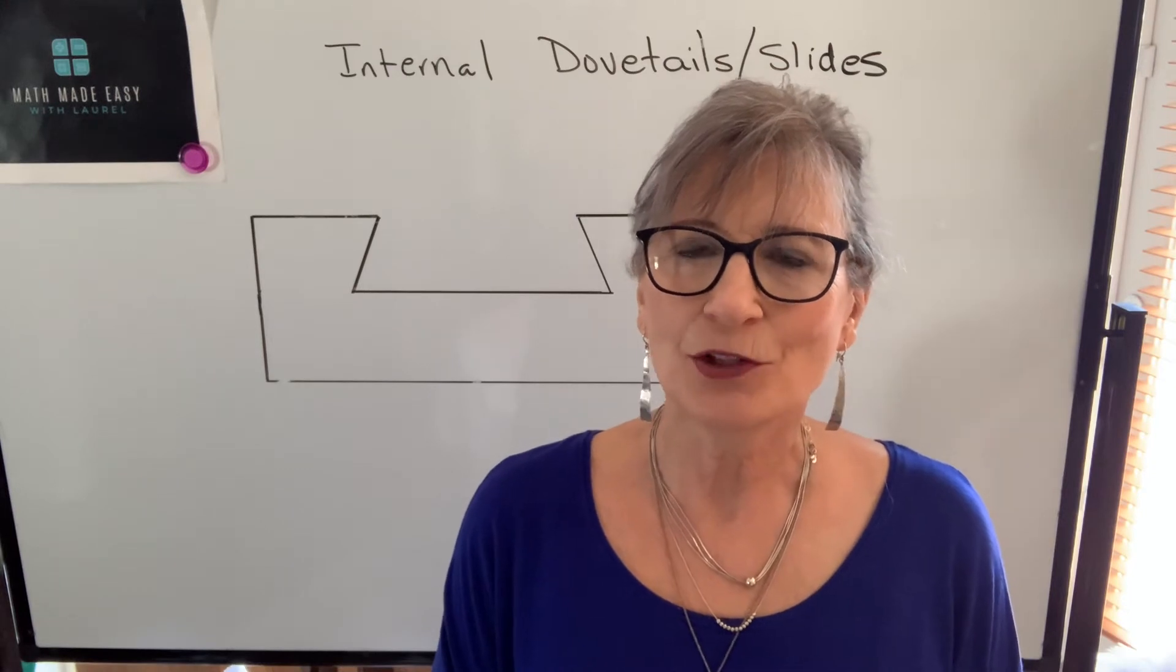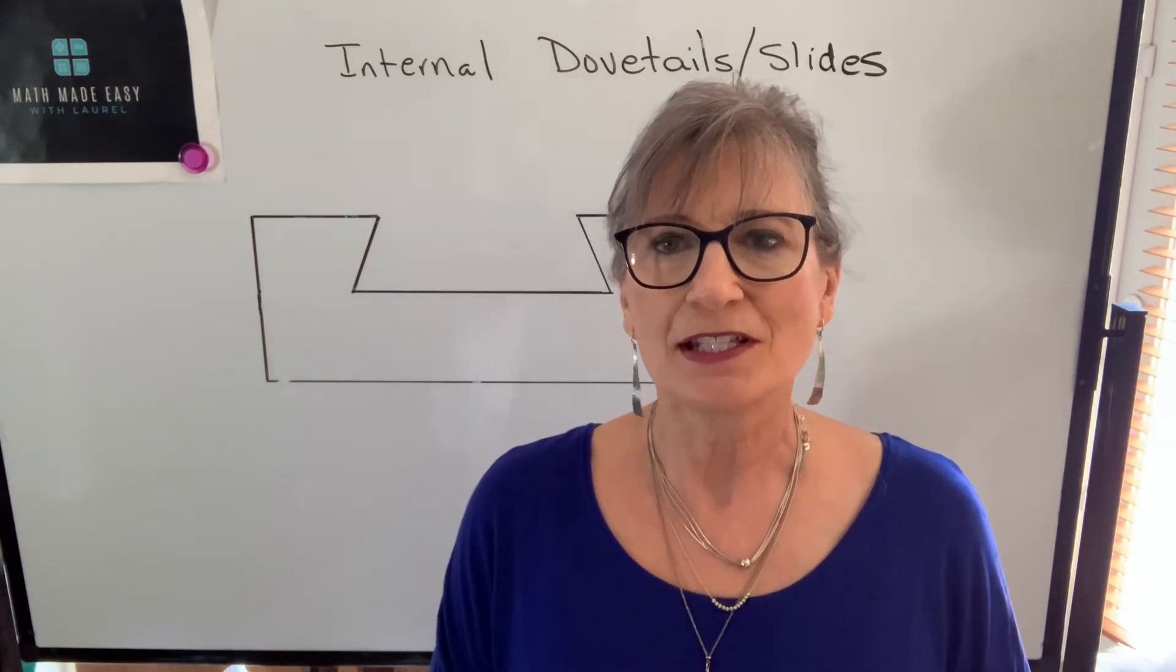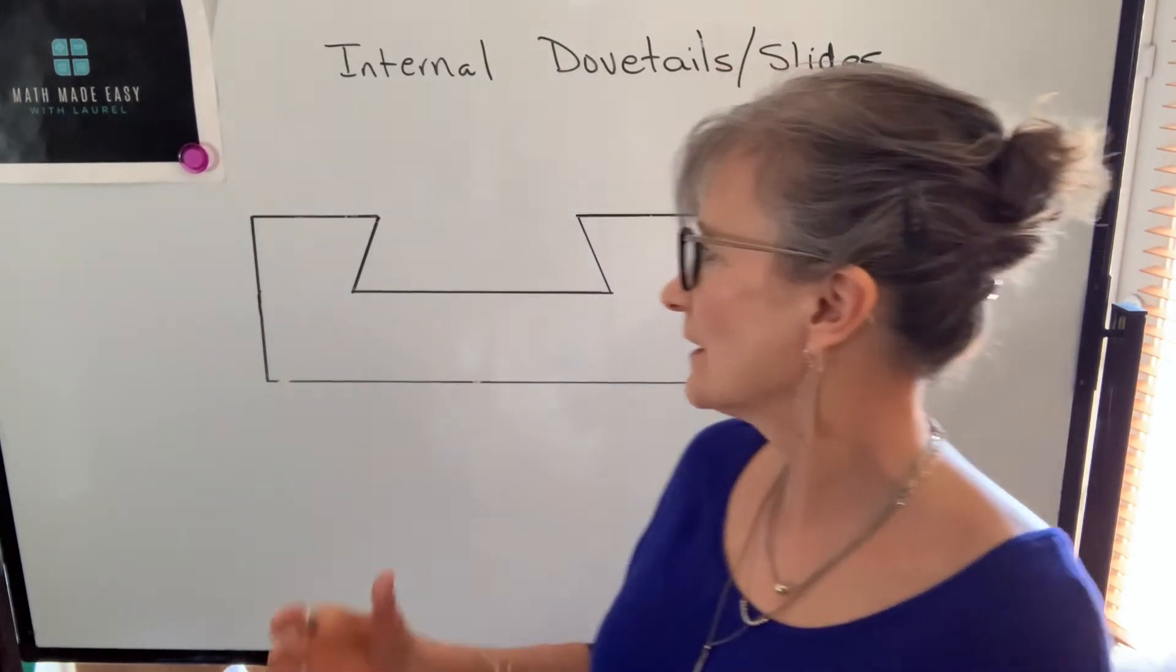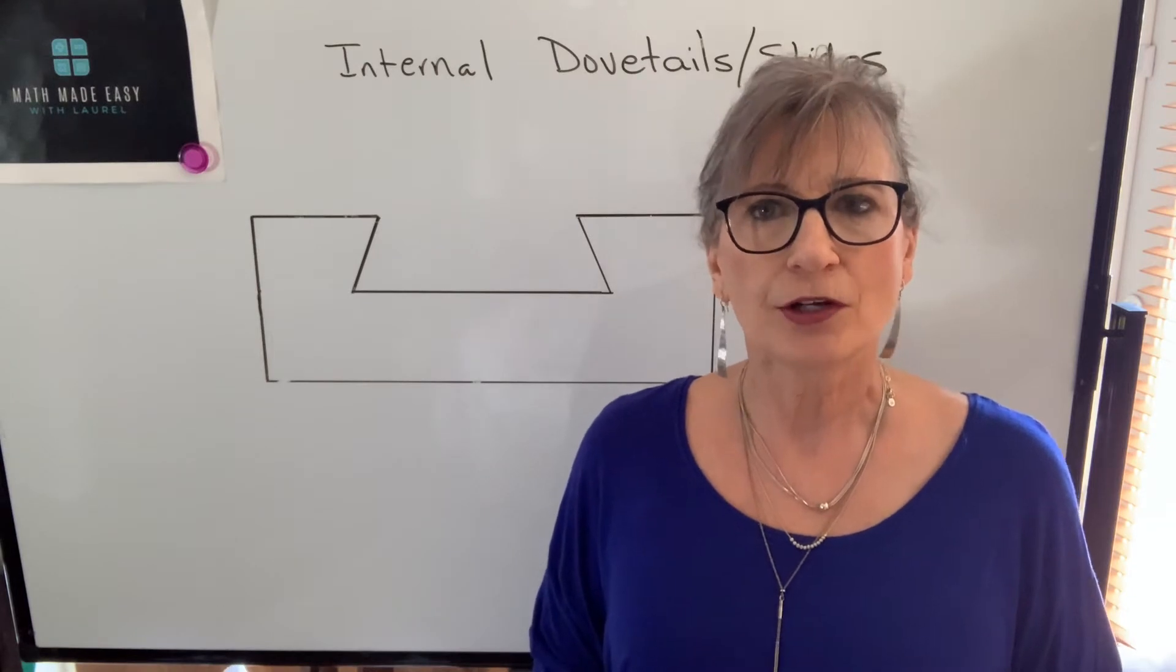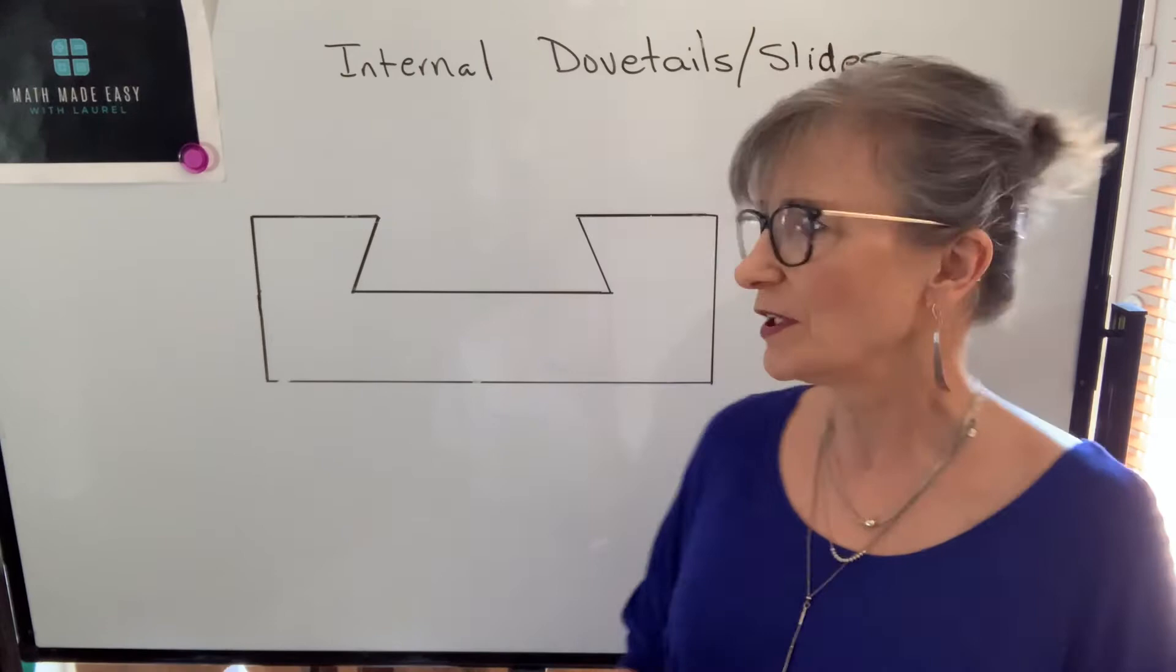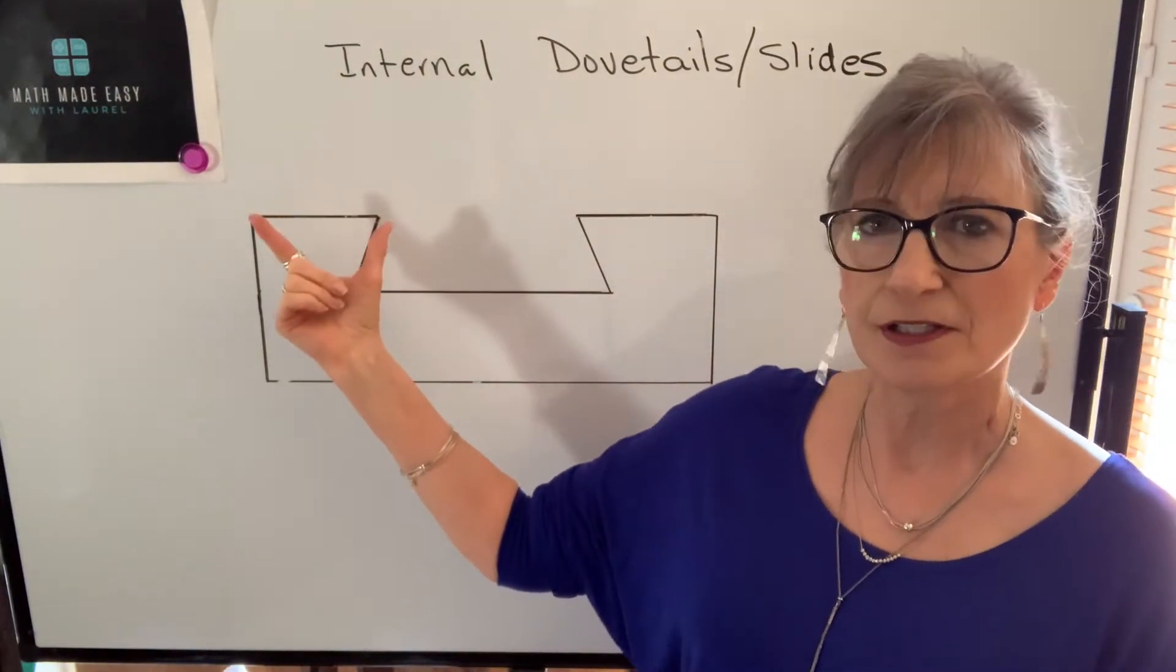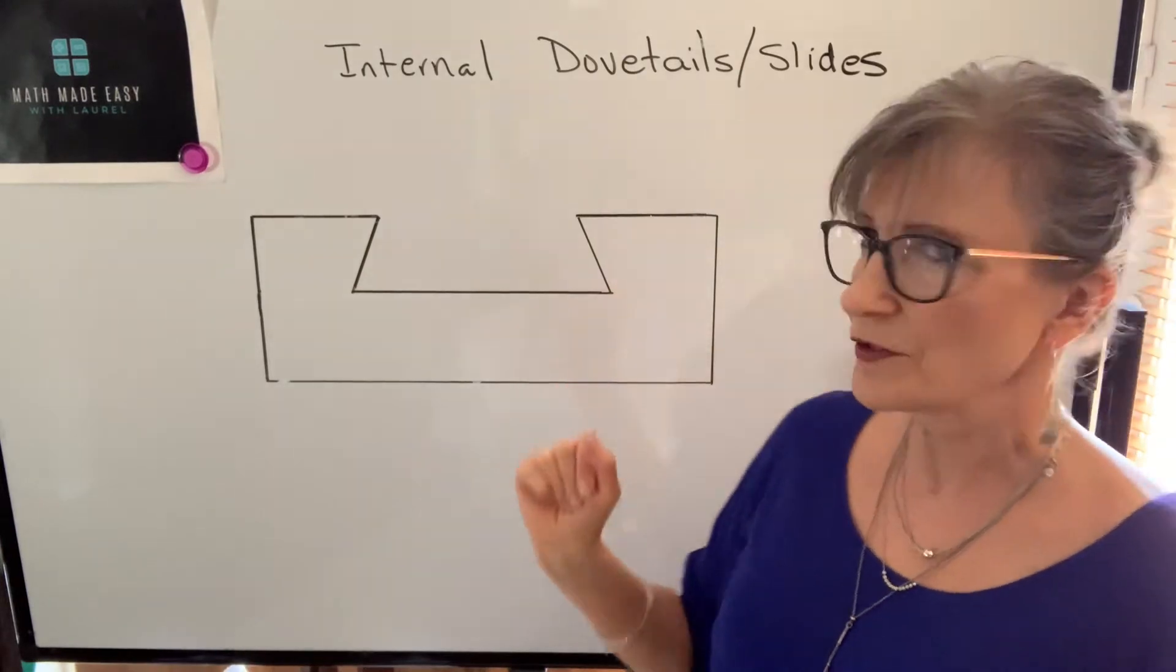In the previous video we talked about external dovetails and the same idea applies to internal dovetails. When you machine a dovetail, whether it's external or internal, and you want to check all of your dimensions against the blueprint, it's going to be very difficult because of these corners, these dead sharp corners, and these corners here.